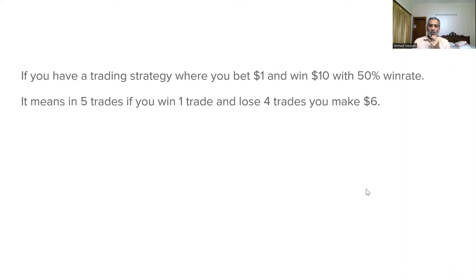So what we have done is used probability theory, and now we know that the probability of losing 5 trades in a row is very low. If we make those 5 trades across 5 different currency pairs, the probability of losing all five is very low. According to your trading strategy, if you bet $1 and win $10 with a 50% win rate — in 5 trades, if you win 1 trade you gain $10, and if you lose 4 trades you lose $4 — you make a net $6. You have a positive expectation.